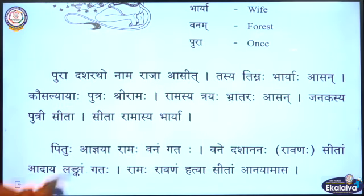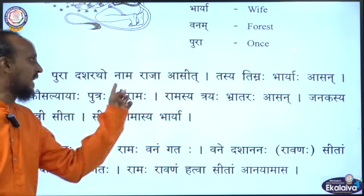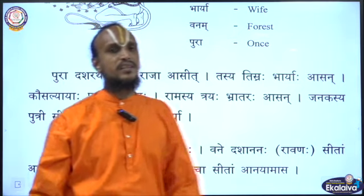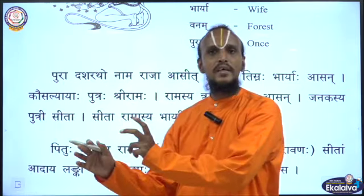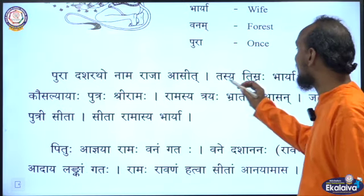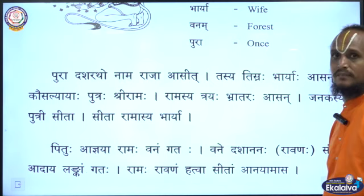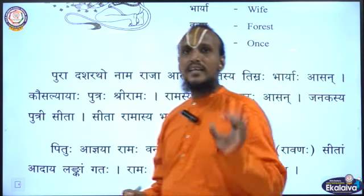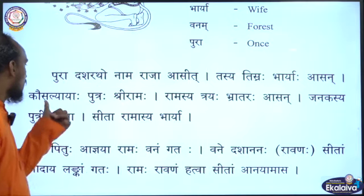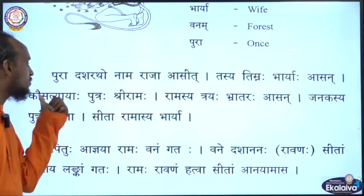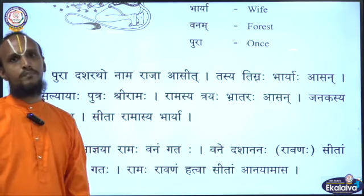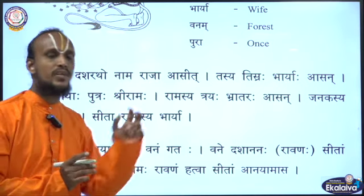Pura Dasha Ratha Naam Raja Aasit — There was a king named Dasharatha. He had three wives. Kausalyayaha Putraha Shri Ramaha — Who is the mother of Lord Shri Rama? Yes, you are right — Kausalya is the mother of Lord Shri Rama.